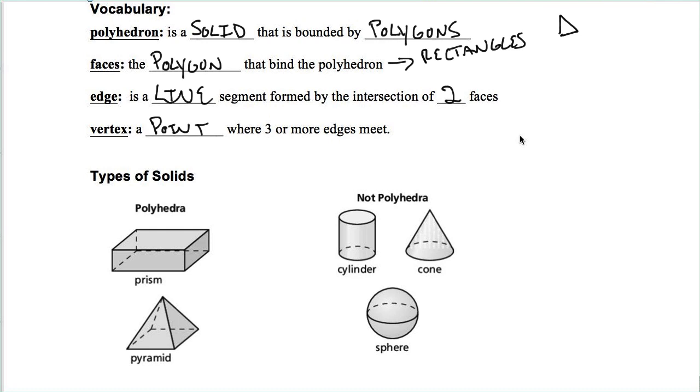Three types of solids. You have polyhedra, which is just the plural for polyhedron. You have prisms and you have pyramids. Those are the type of polyhedrons. Again, it's a polygon that's bounded by a polygon.